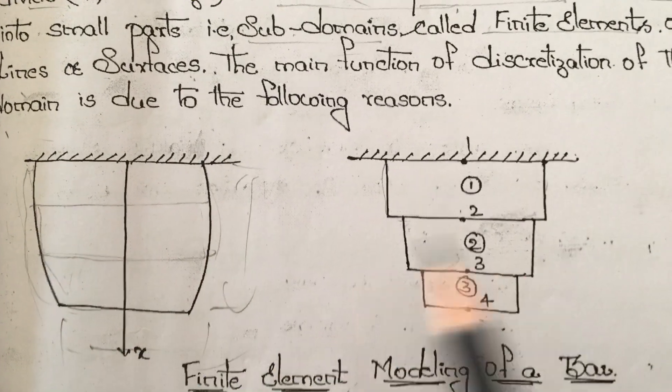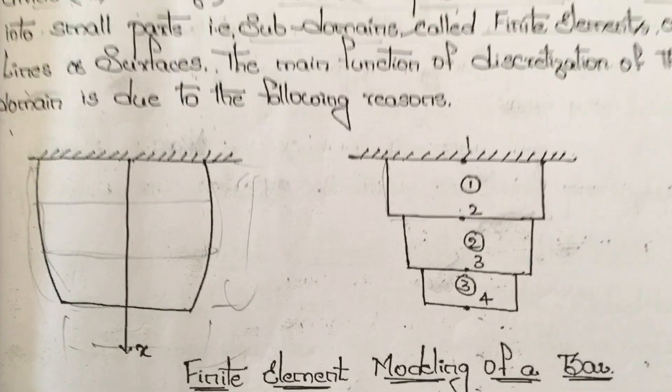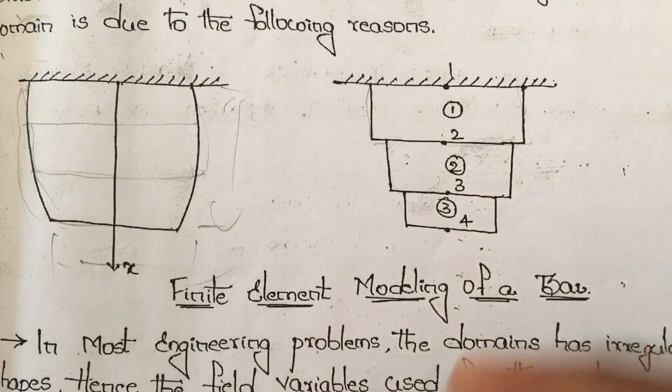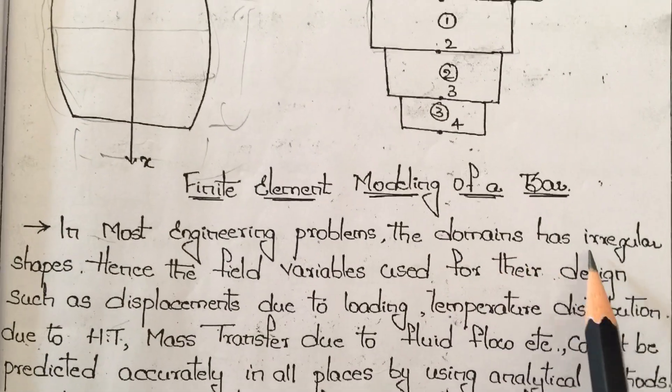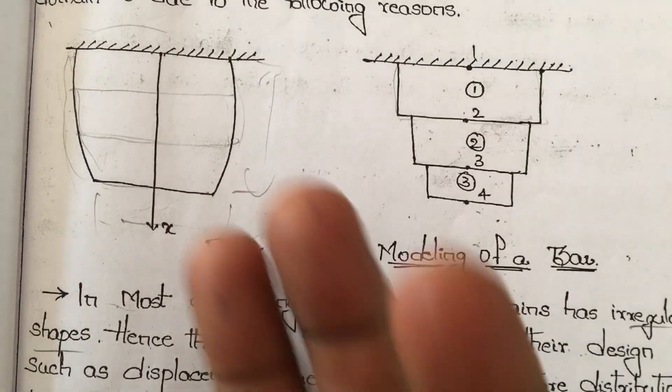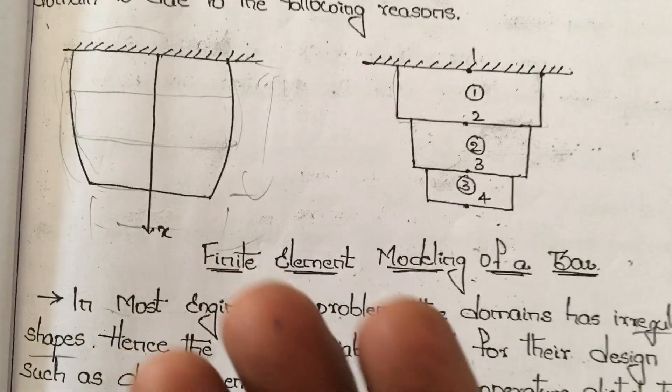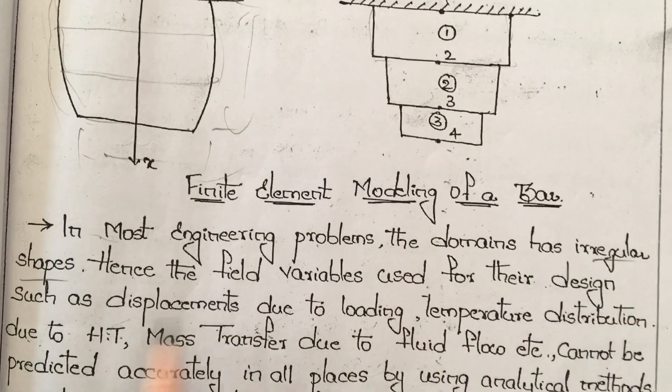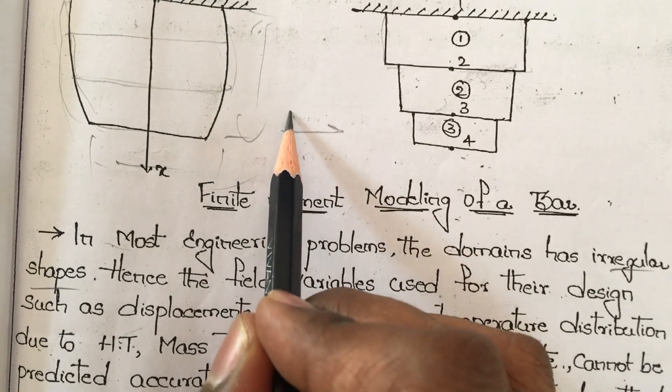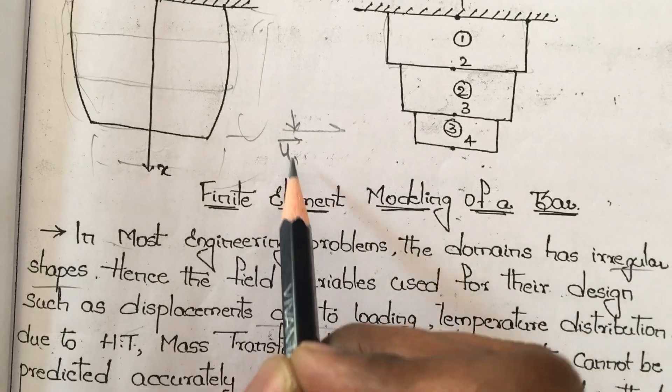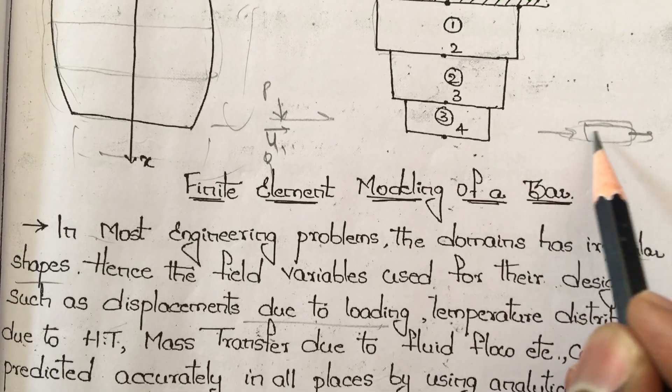So we can match it to a rectangle shape whose area we know. This is a finite element. In most engineering problems the domain has irregular shape. Hence the field variables used in design such as displacement due to loading, temperature distribution due to heat transfer, and mass transfer or fluid flow cannot be predicted accurately in all places.